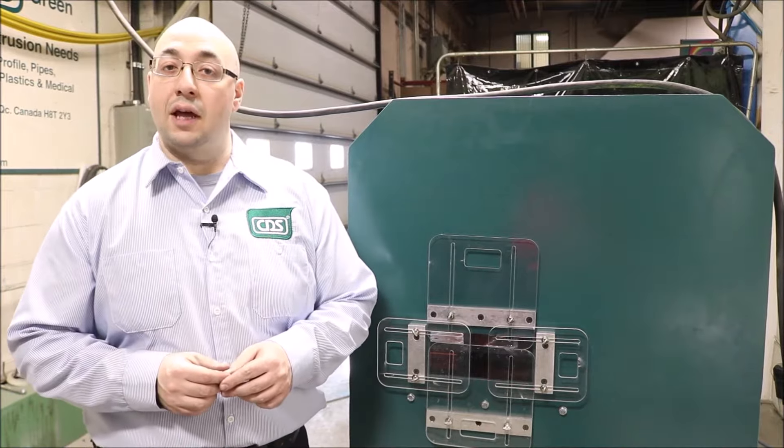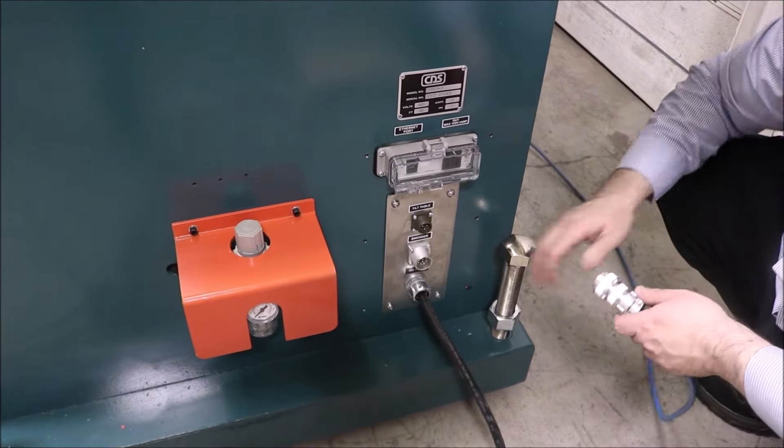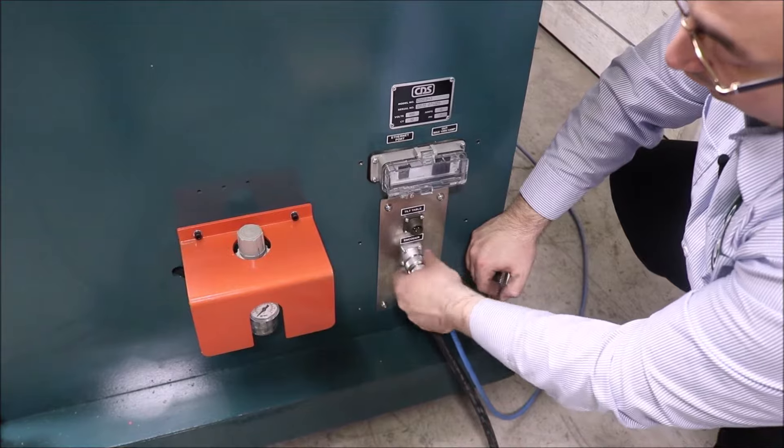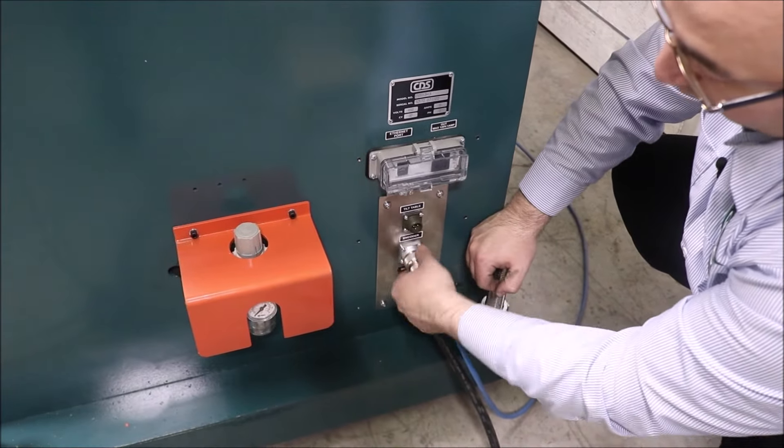The first thing to do is connect the pneumatic and the encoder. We will start by connecting the encoder onto the encoder signal. So with the encoder cable, we will just put it in and it's a quick connect and we're just going to screw it until it's properly tightened.